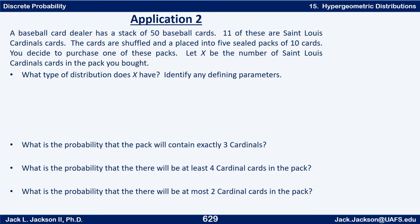We've got a finite population size capital N equals 50. Within that 50 there are 11 successes — that's our capital M. Little n is our sample size, which is 10. X is the number of Cardinals, i.e., number of successes in the sample. Notice this is done without replacing them — we don't count a card more than once; these are actually 10 different cards. So this is exactly the setup for a hypergeometric distribution.